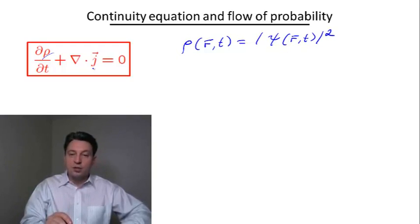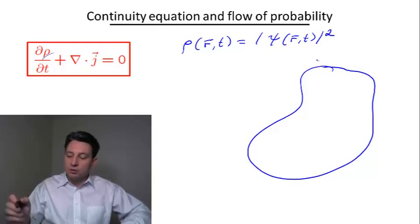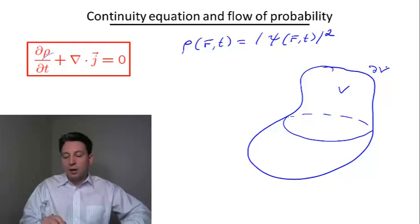So to see that this equation indeed describes some sort of a conservation law, let me consider an arbitrary volume in space. So let's say this is a volume V. And let me also denote the surface encircling this volume as ∂V.